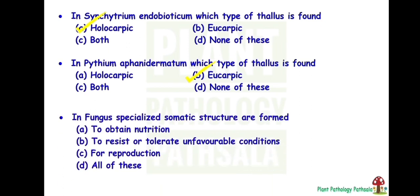Next: in fungus, specialized somatic structures are formed due to? Answer is D — all of these. So, fungus specialized somatic structures are formed to obtain nutrition, to resist or tolerate unfavorable environmental conditions, or for reproduction.